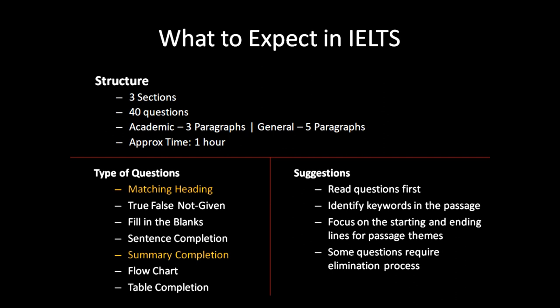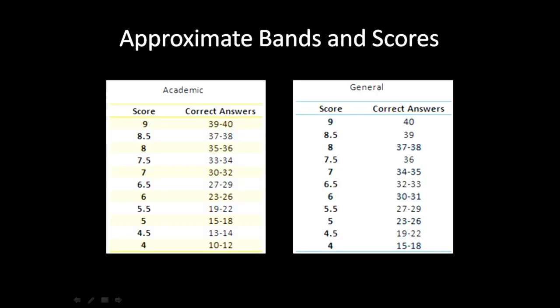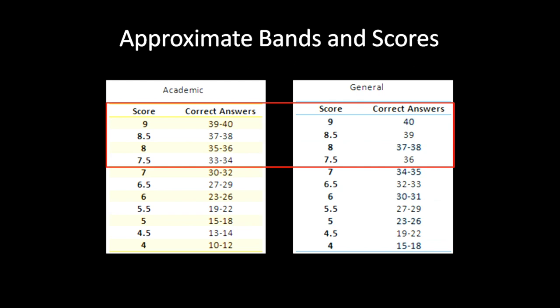Lastly, some questions are tricky and require an elimination process. If a question is very difficult, it may be that you have to eliminate the wrong options to get to the right answer. We won't be having that type of question in this exam, but maybe in future videos I'll include some. A lot of my students ask about the relation between the IELTS band and correct answers. If you want to score 7.5 and above in academic, you'll have to correctly answer at least 33 questions. In general, you need to answer at least 36 questions correctly.